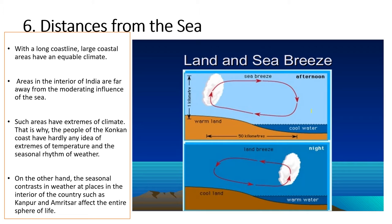Exactly opposite to this, at night the situation is completely different. At night, the temperature over the sea is higher compared to the land, and air pressure decreases. So the air flows from the land towards the sea, which we know as the land breeze or Sthaliya Sameer. In tropical regions, sea breeze has special importance.